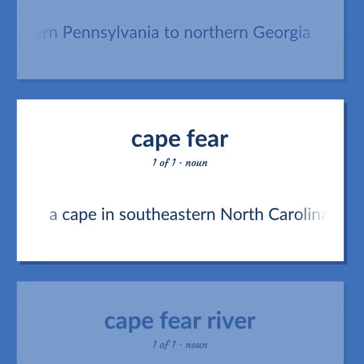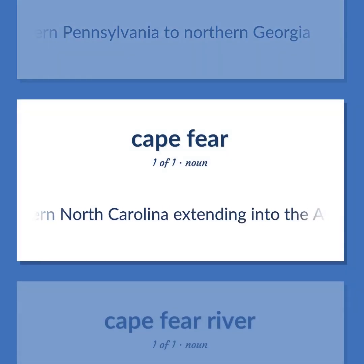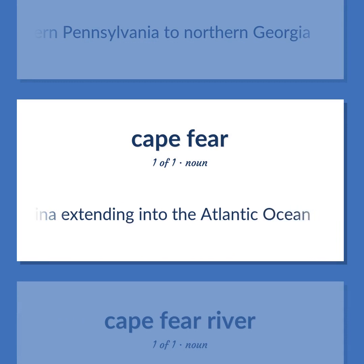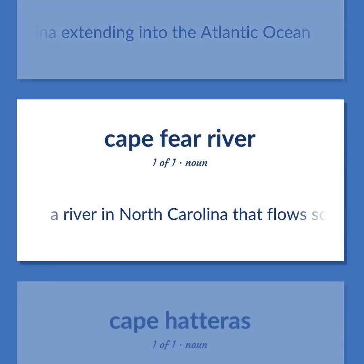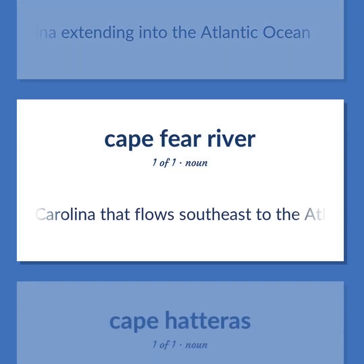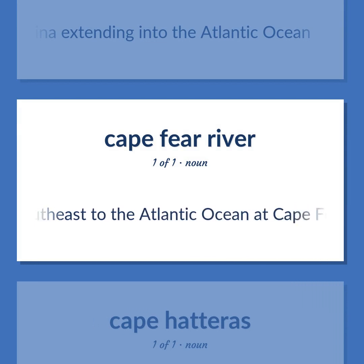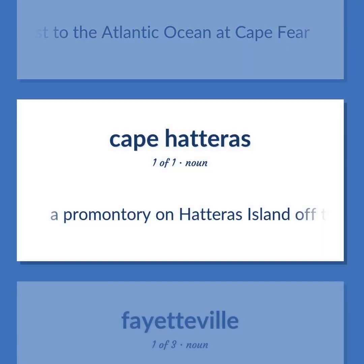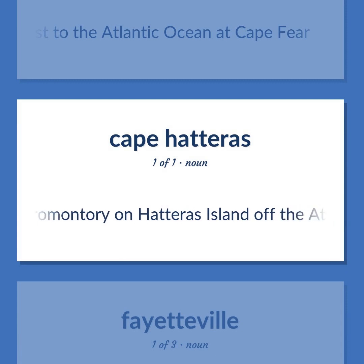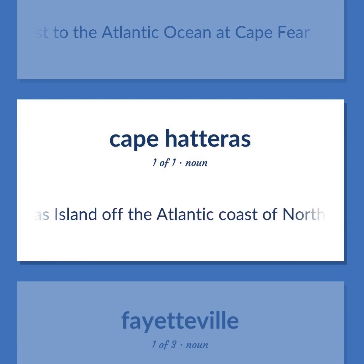A cape in southeastern North Carolina extending into the Atlantic Ocean. A river in North Carolina that flows southeast to the Atlantic Ocean at Cape Fear. A promontory on Hatteras Island off the Atlantic coast of North Carolina.